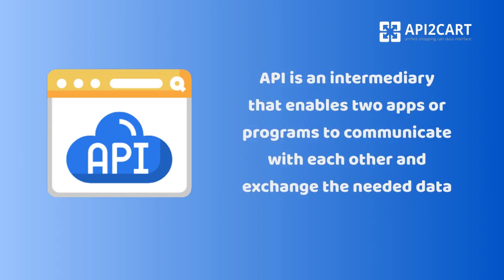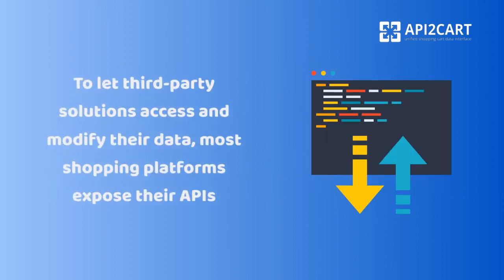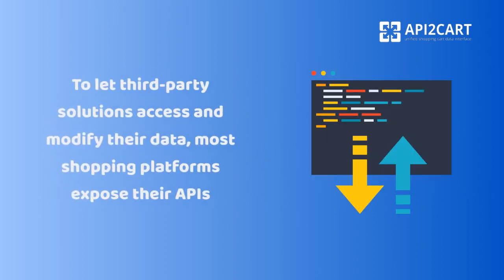An API is an intermediary that enables two apps or programs to communicate with each other and exchange the needed data. To let third-party solutions access and modify their data, most shopping platforms expose their APIs.